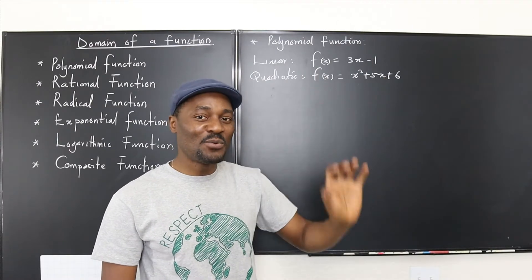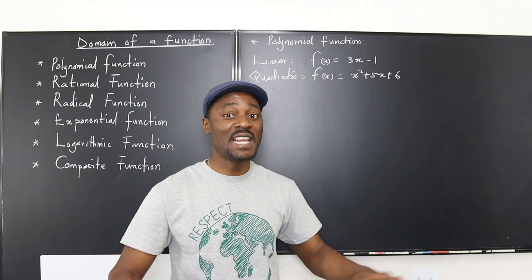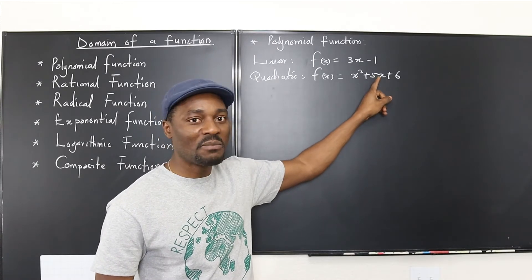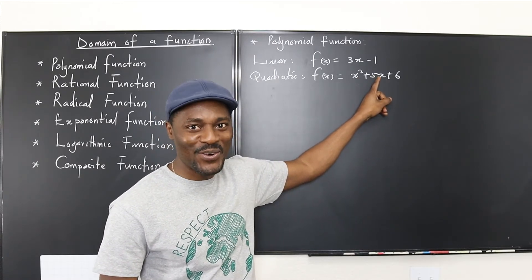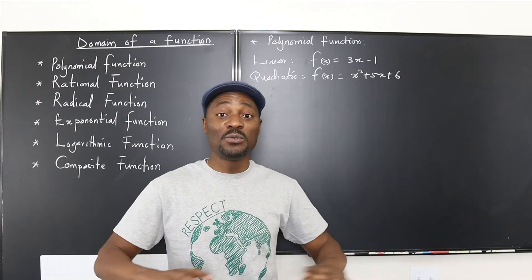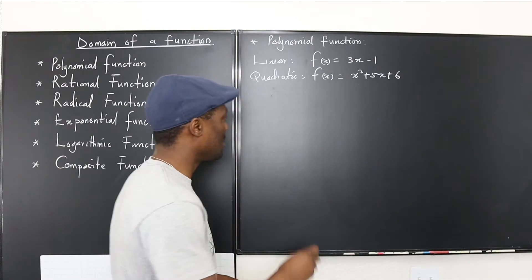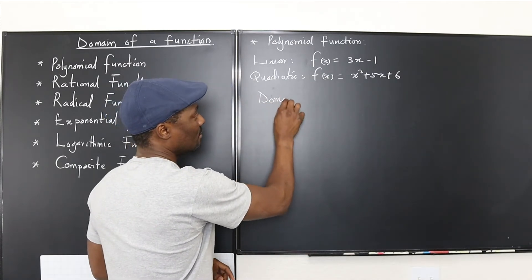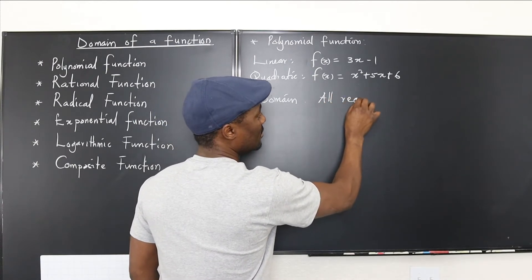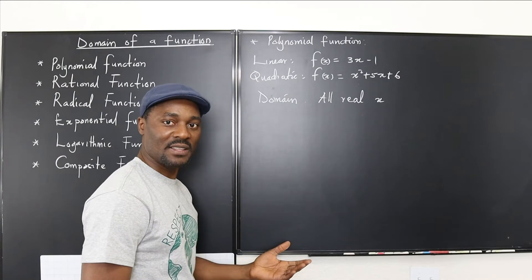Every single real value you plug in will give you an output. Ask yourself: is there any number I cannot square? No. Is there any number I cannot multiply by 5? No. Is there any number I cannot add 6 to? No. It means every single real number is in the domain of this function. You say the domain is all real numbers, or all real x.